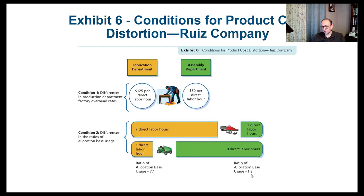So to confirm: condition one is $125 versus $50 per direct labor hour — fabrication rate is much higher than assembly. Condition two is the difference in ratios: 7 versus 1 in fabrication and 3 versus 9 in assembly. Because of these large differences, it's better to use the multiple department method for more accurate calculations. In the next video, we're going to go over ABC, or activity-based costing, which will give us an even better representation and allocation of overhead.